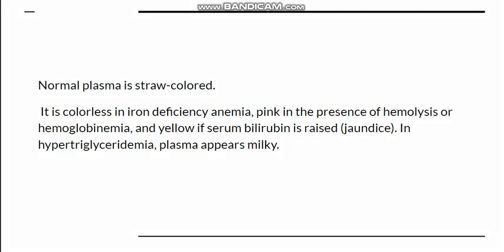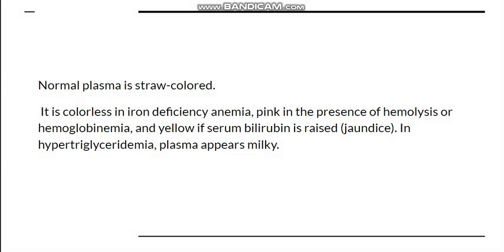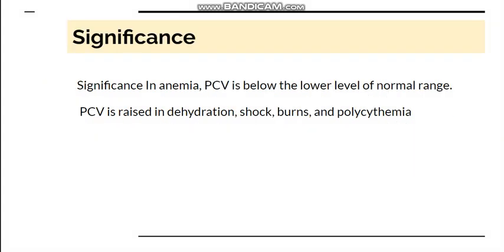After centrifugation we should also observe the plasma color. Normally plasma is straw-colored, but it is colorless in iron deficiency anemia, pink if hemolysis is present (because RBCs break down giving a pink hue), yellow if serum bilirubin is raised, and milky in hypertriglyceridemia. Although not directly related to the PCV value, checking plasma appearance adds useful diagnostic information.